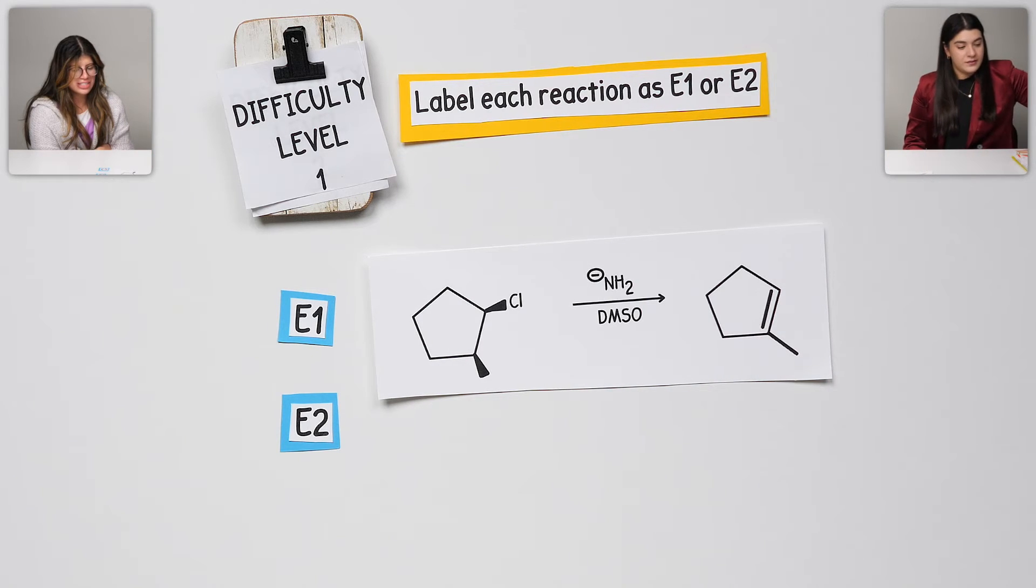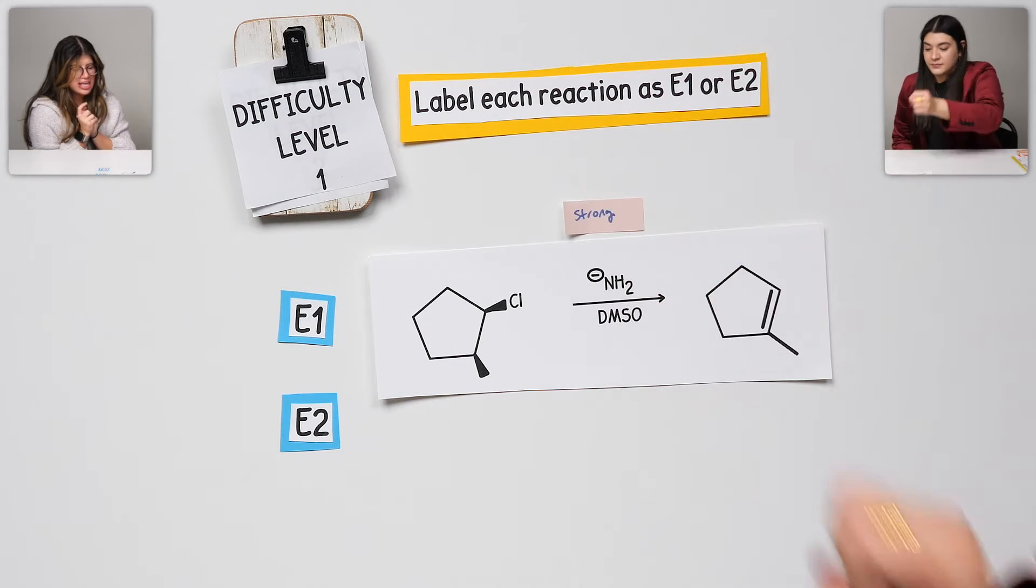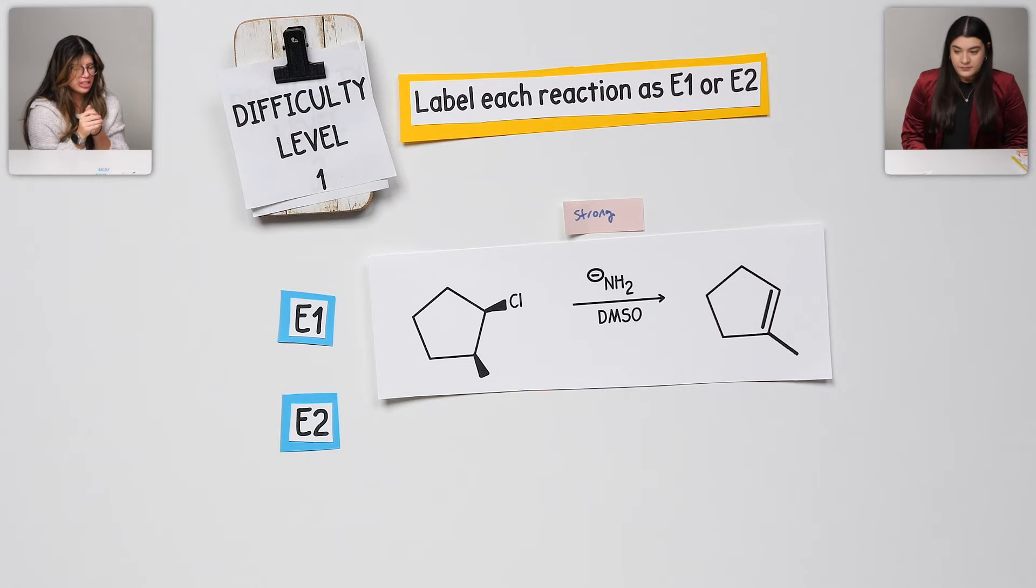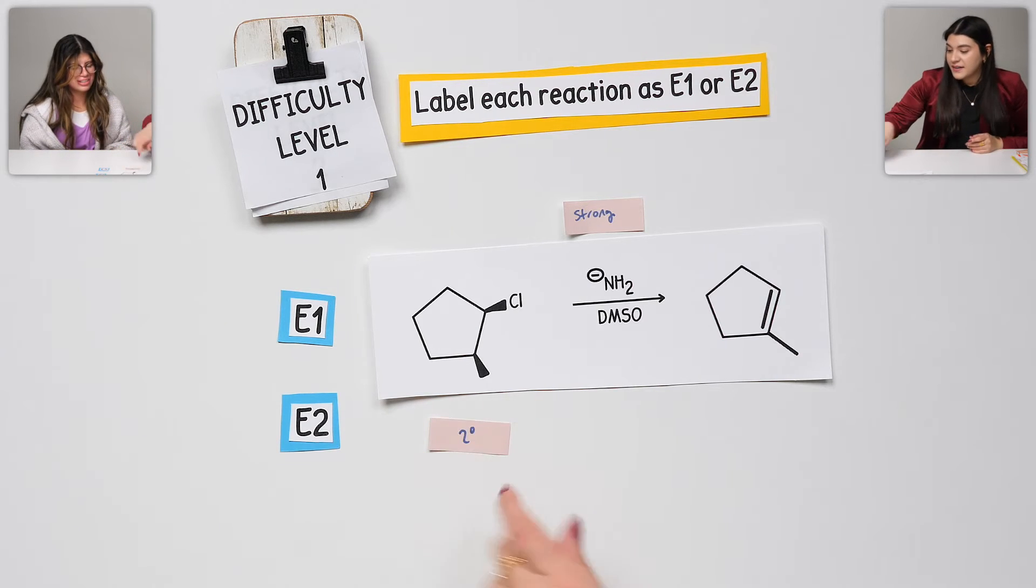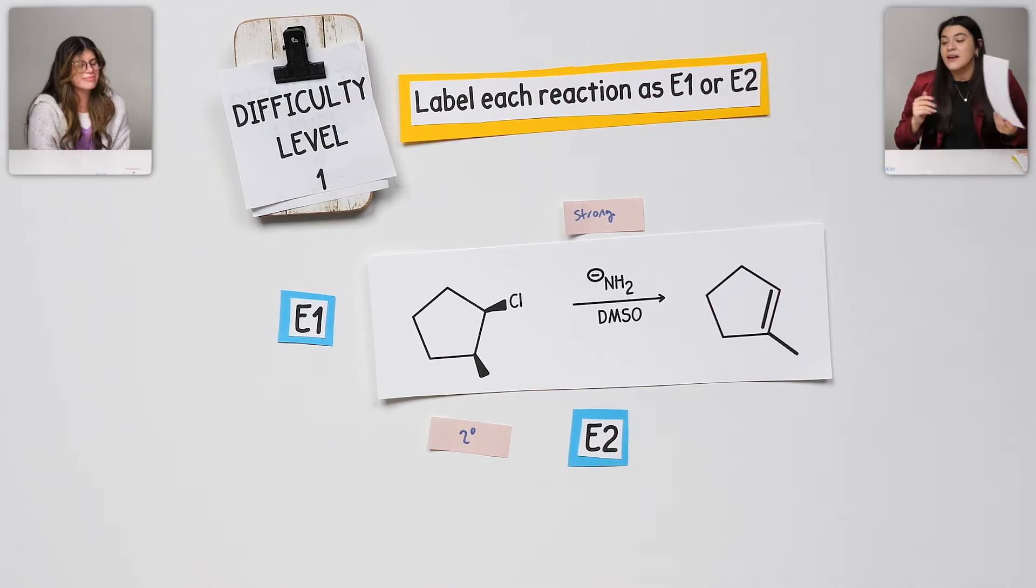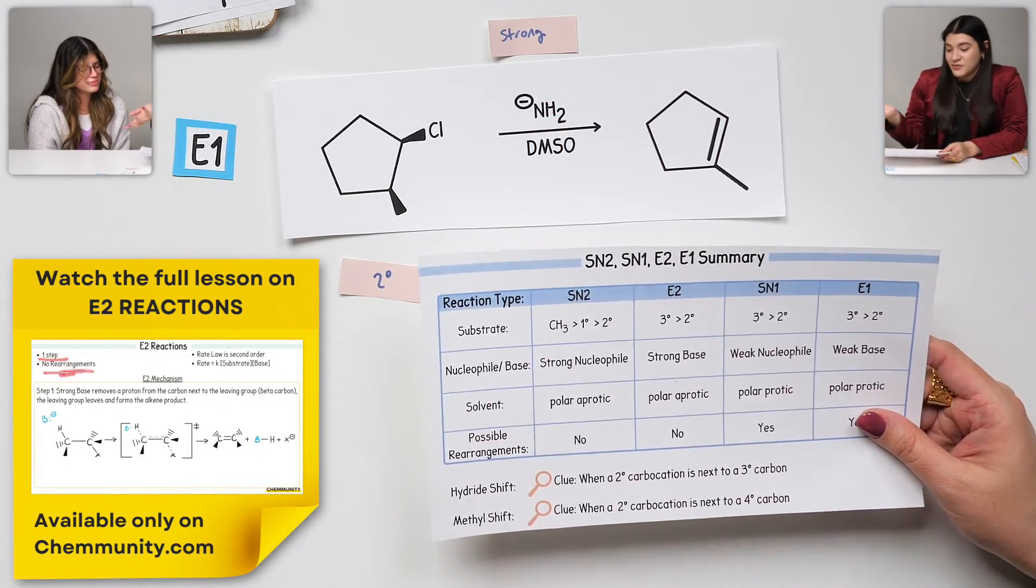In this one, I want to say it's E2. Why? Because, once again, strong base. And then, they both have tertiary or secondary that would work for either of them. I think that's the biggest one that I can think of. That is. And then, yes, you're right. The fact that this is secondary. Go ahead and label what you think it is. E2.